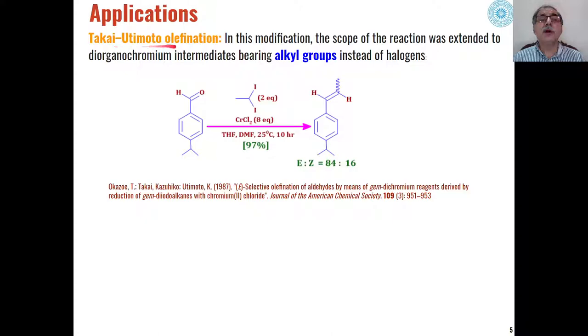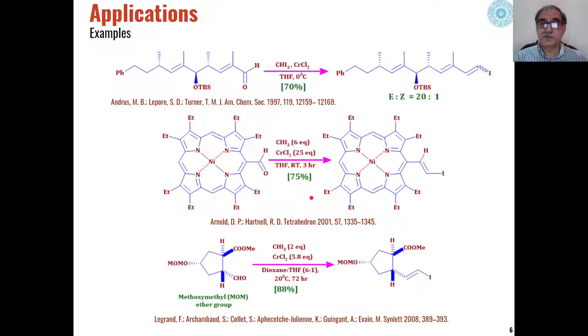One more modification of Takai is Takai-Utimoto olefination. In this modification, instead of iodoform we have used substituted alkyl groups on the iodoform where one of the groups is replaced by an alkyl group instead of iodide group. When alkyl iodides react with chromium chloride under these conditions, we get these types of products with the major product being the E-product having 84% yield in comparison to the Z-product having only 16% yield.